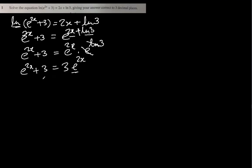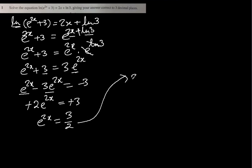Now we can bring this e to the power 2x to the other side. So e to the power 2x minus 3 e to the power 2x equal to minus 3. The combination of these two will be minus 2 e to the power 2x because they are exactly same, only coefficients are different. We can cancel negatives on both sides.